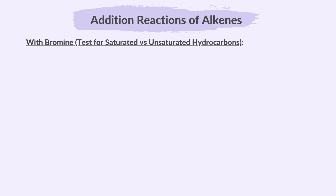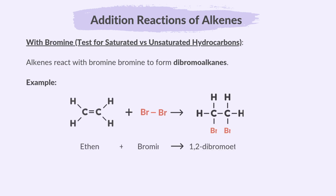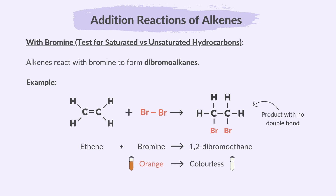With bromine: the reaction of alkenes with bromine is the same as the test to distinguish between saturated and unsaturated hydrocarbons. Alkenes react with bromine to form dibromoalkanes. For example, ethene reacts with bromine to form 1,2-dibromoethane. Remember, the bromine water turns from orange to colourless.